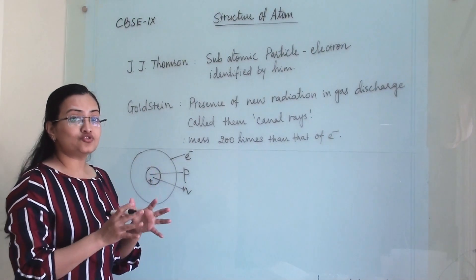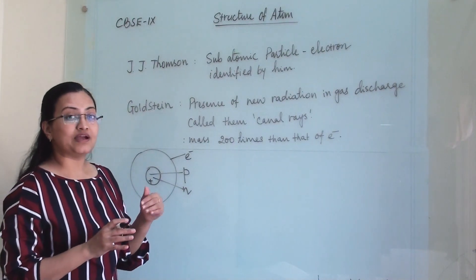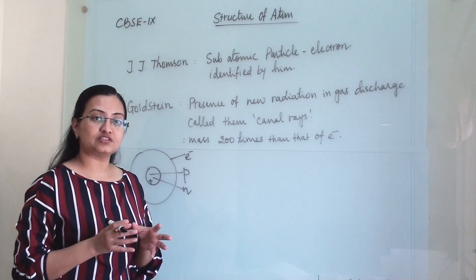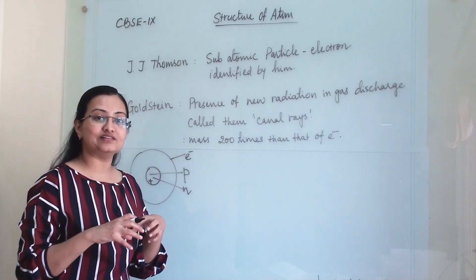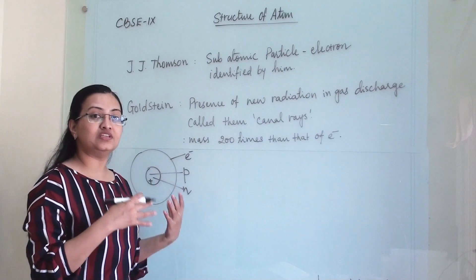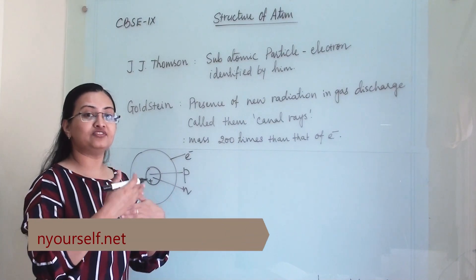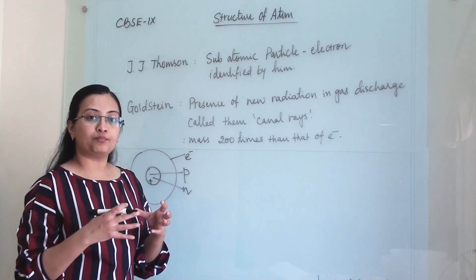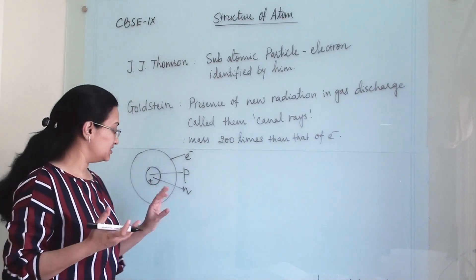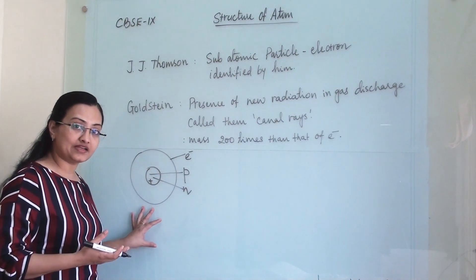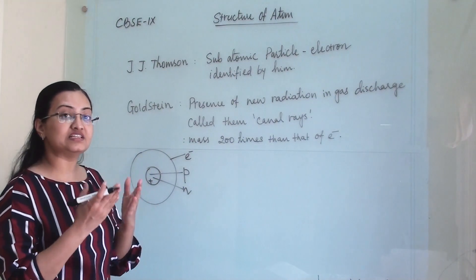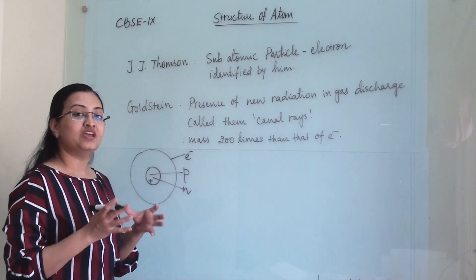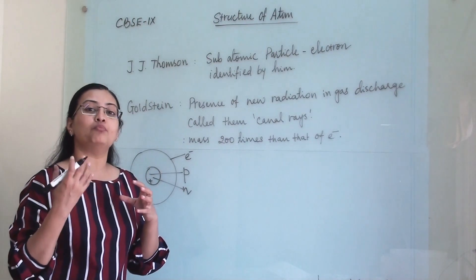Once these two particles were discovered, Dalton's theory was no longer able to hold true for all things, because we had to accommodate these particles within the atom. After this, some scientists proposed their own models of the atom. We know today which model is correct, but earlier, when the correct structure was not yet known, scientists proposed several models.